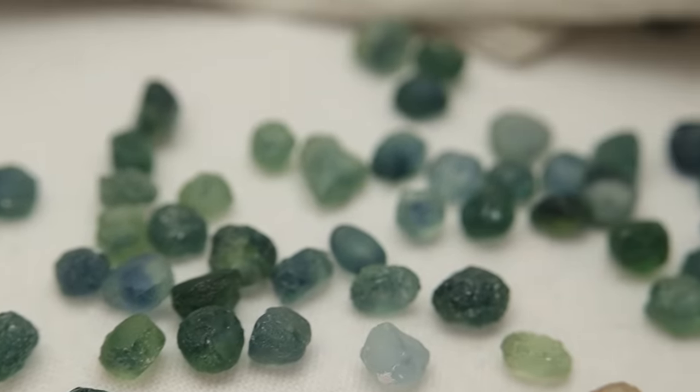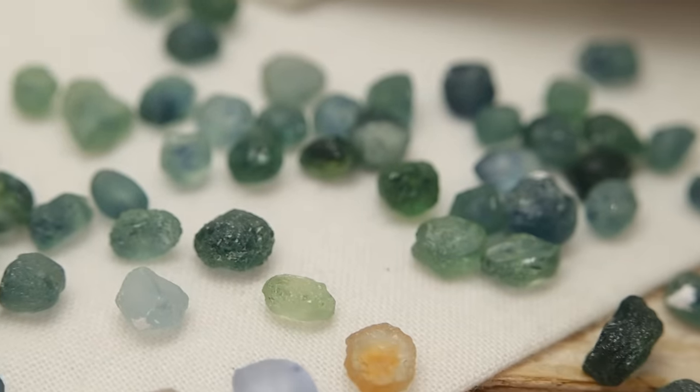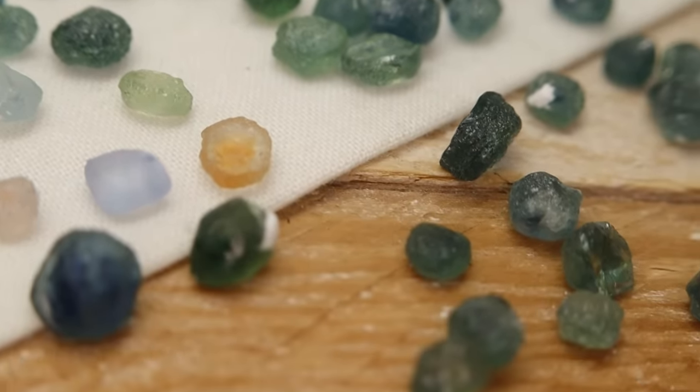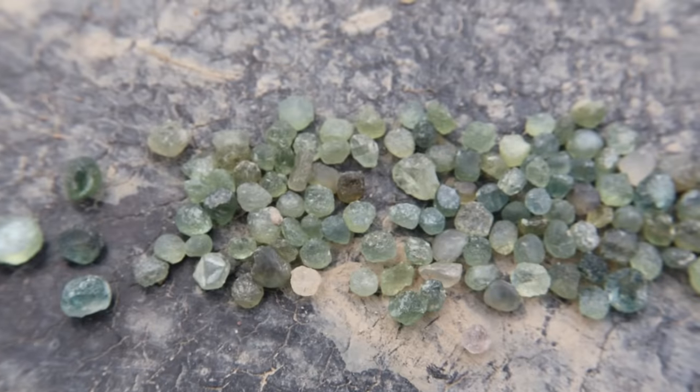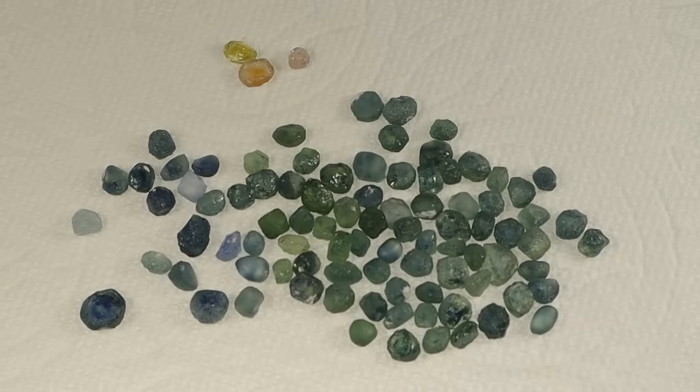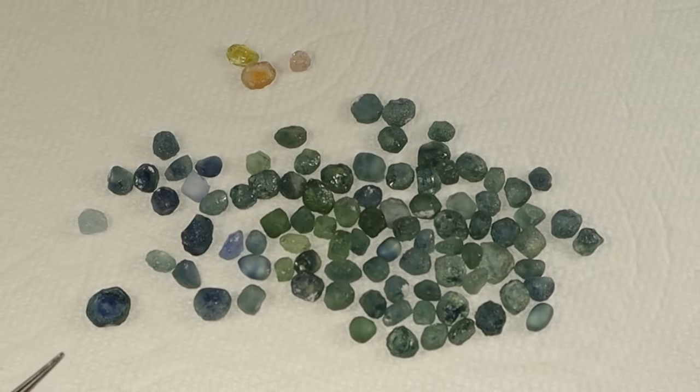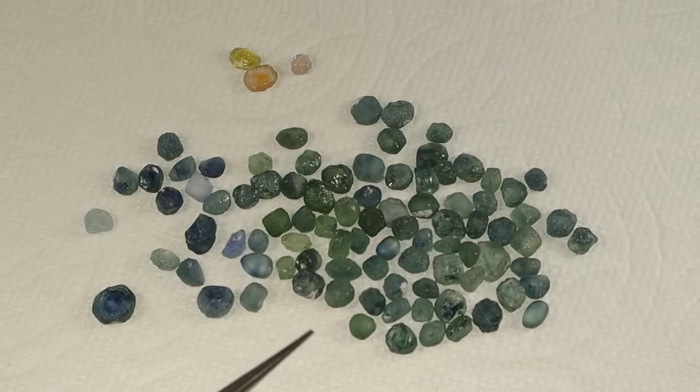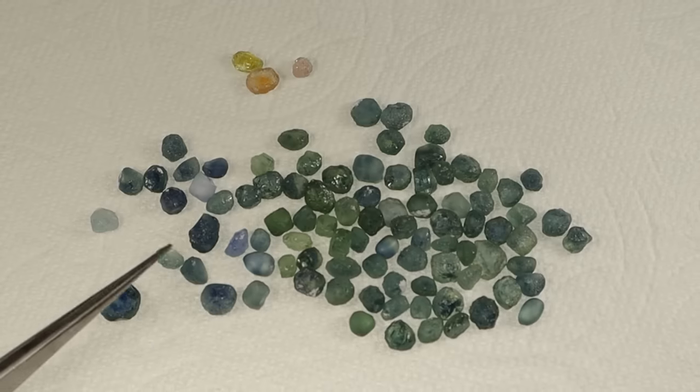Recently I've received back the sapphires that I left to have heat treated at the Gem Mountain Sapphire Mine in Montana from my trip there earlier this year. These were the sapphires right before I left them for heat treating, and here they are now. Mostly they turned out in the greenish to bluish hues, mostly falling somewhere in between in the teal-ish shades.